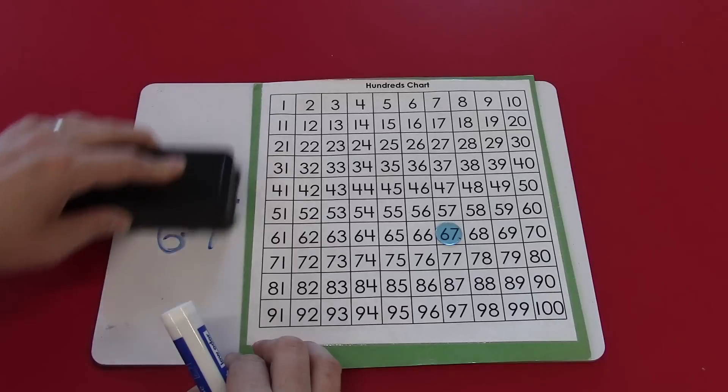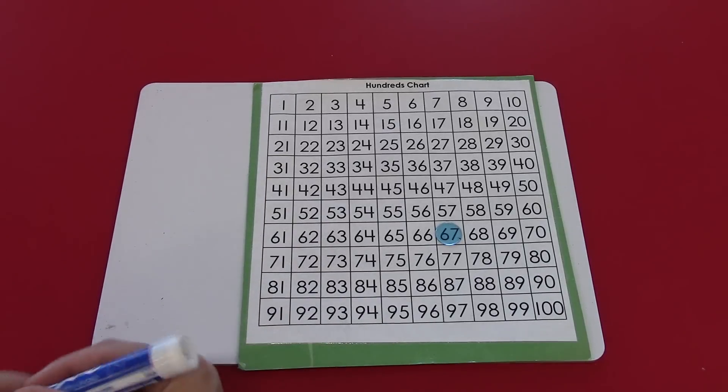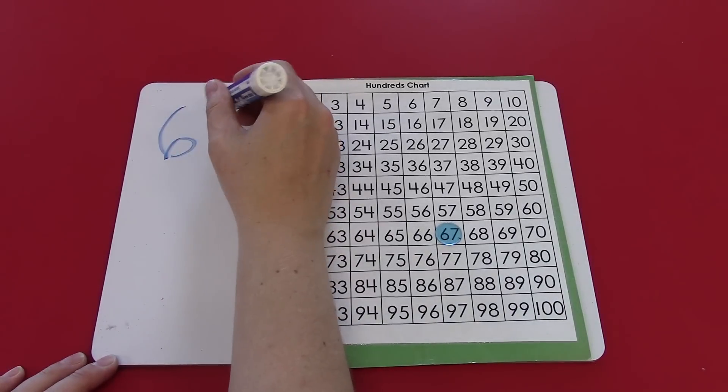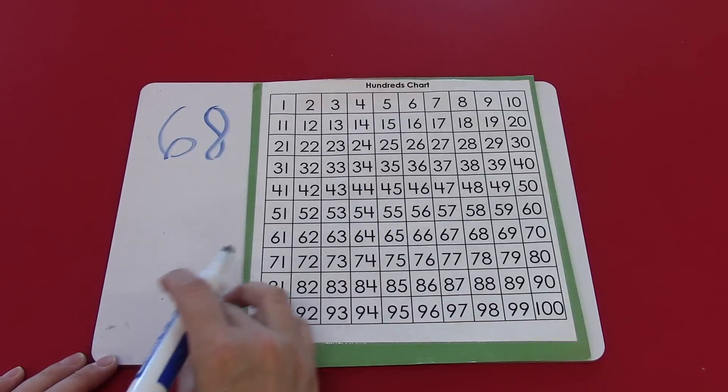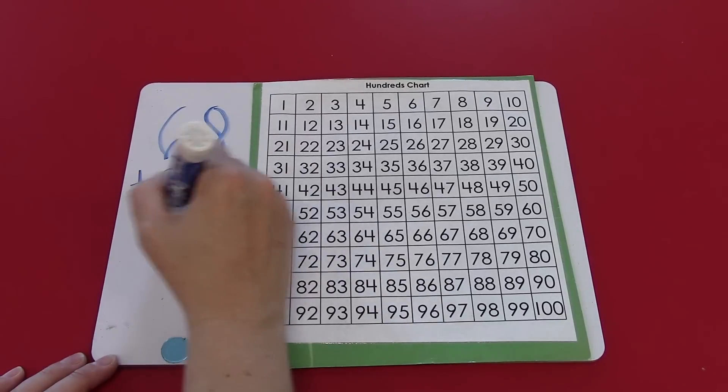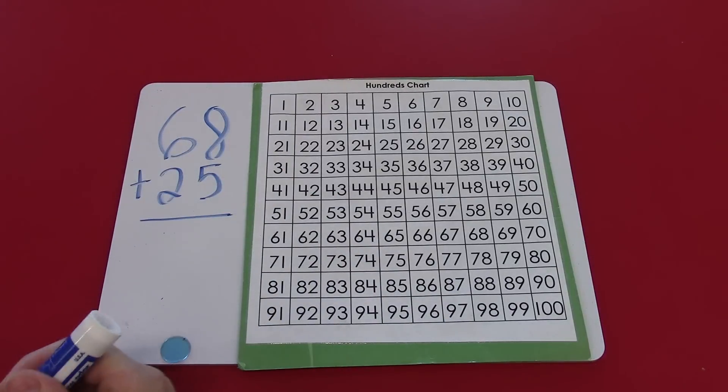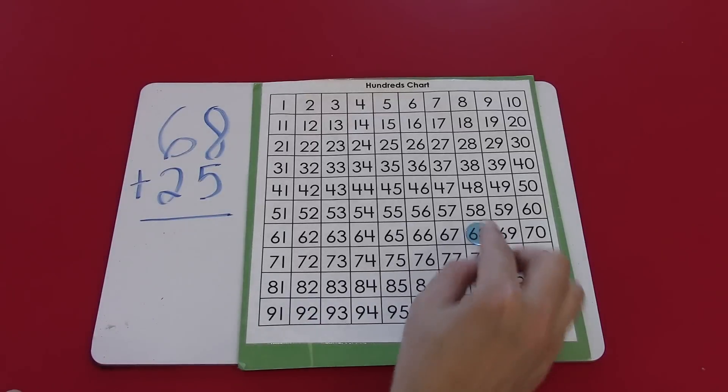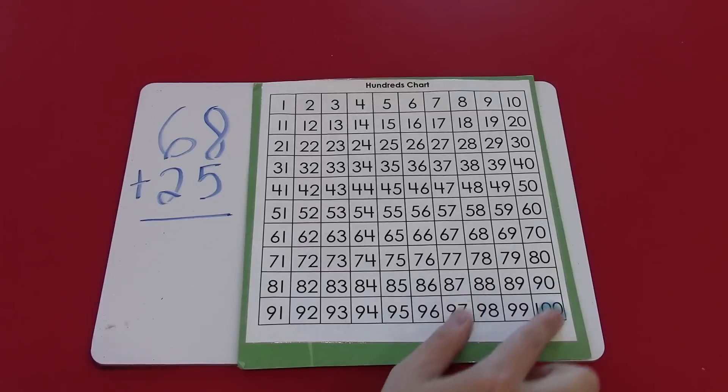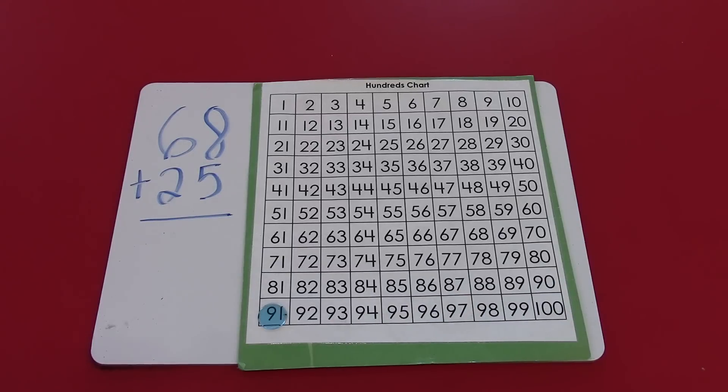Let's try another one. Let's try 68 plus 25. So I'm going to start at the 68, 10, 20, 21, 22. Do you know where to go now? Yep, one more is going to be 91. So we're going to carry on there. I've lost track of my counting so let's go back.